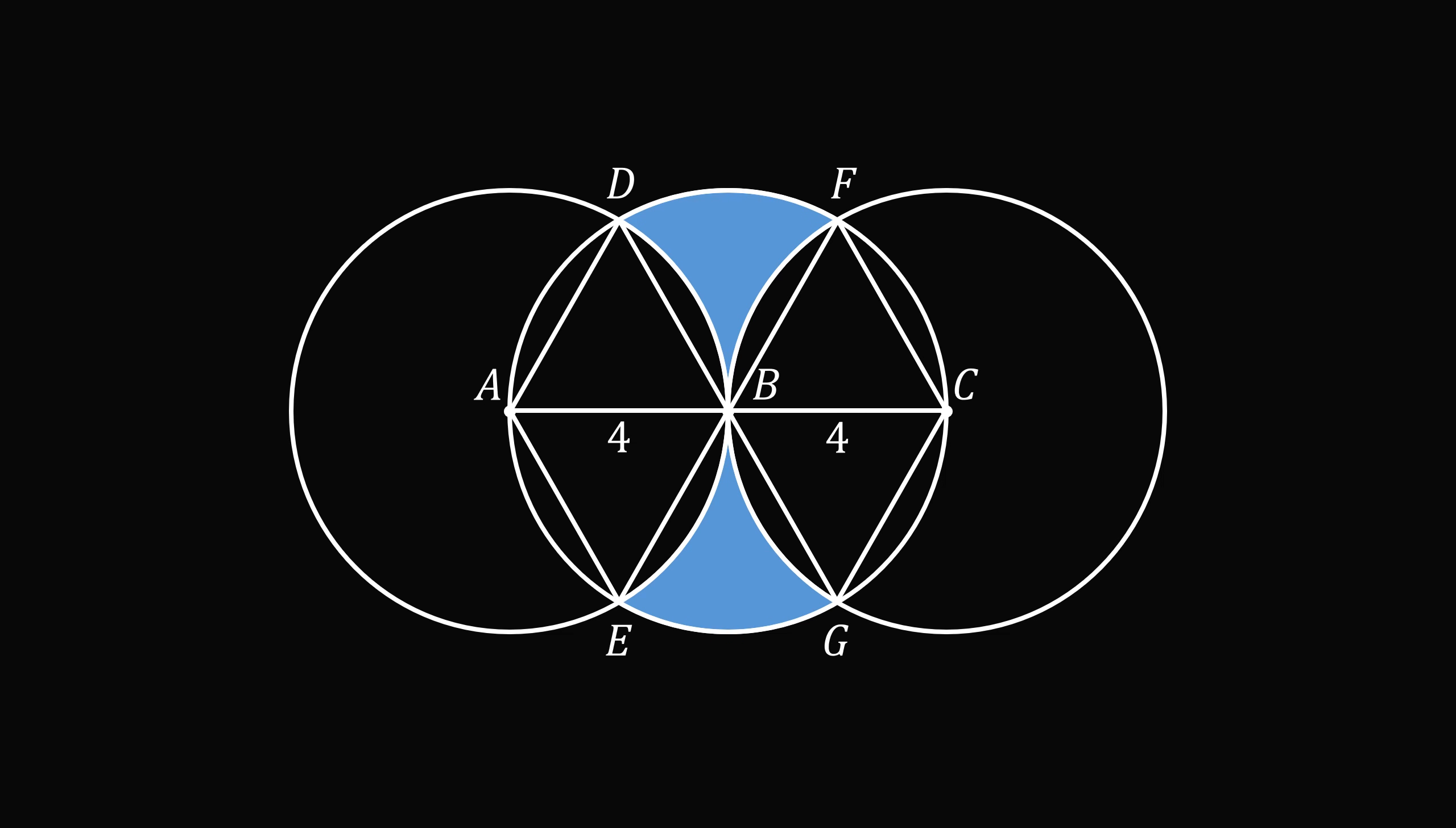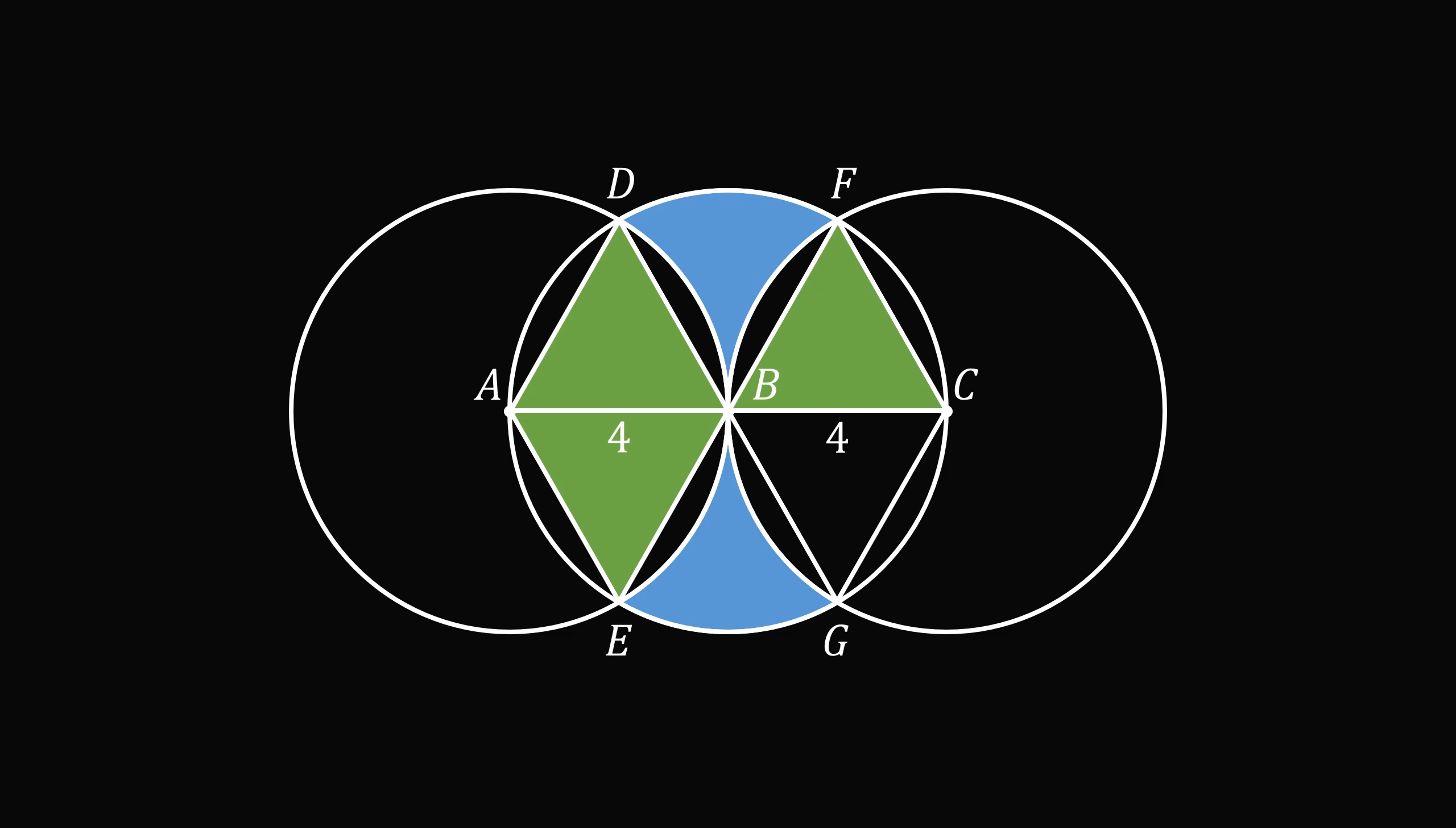We now can break down the areas into the following shapes. ADB is an equilateral triangle because each side is a radius of either A or B, or both, and each side has a length equal to 4. So ADB is an equilateral triangle. We also have equilateral triangles BFC, AEB, and BGC.